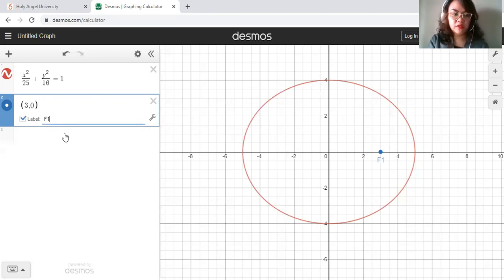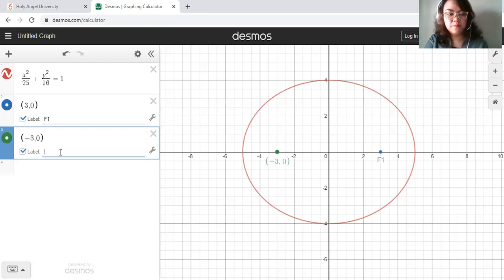I usually label the positive points as my 1. So let's say positive focus would be F1, negative would be F2, positive vertex would be V1, then negative would be V2.